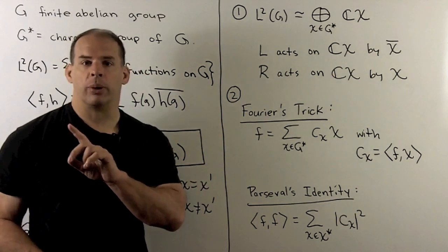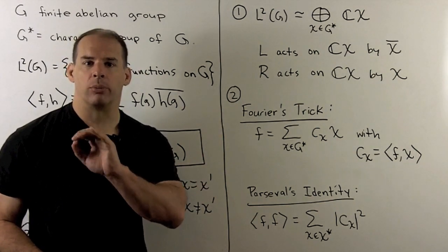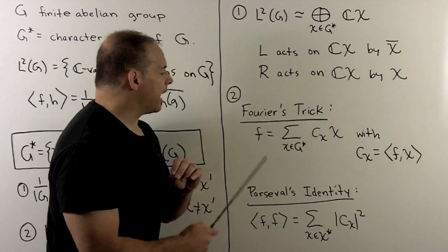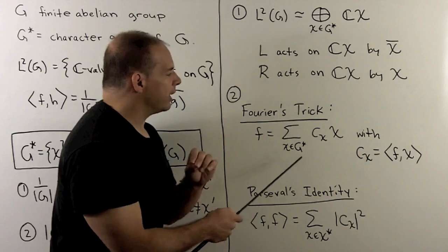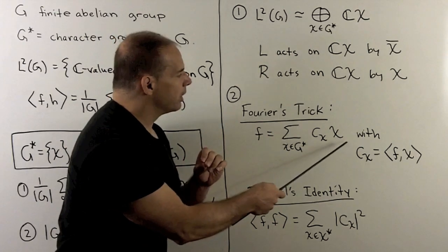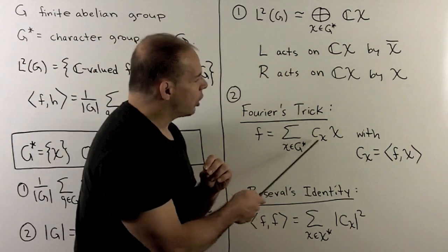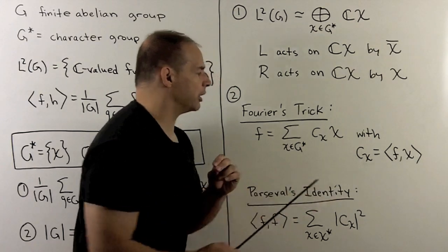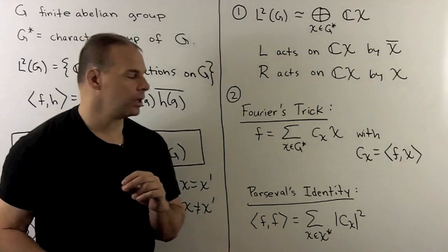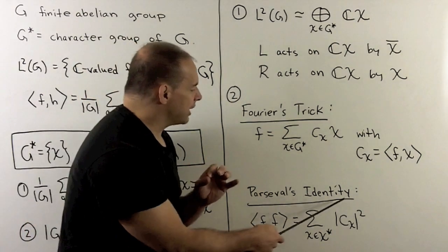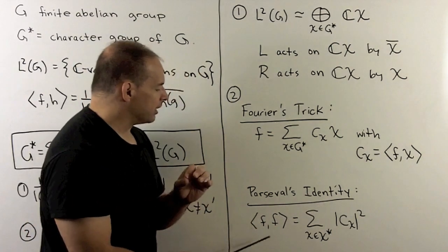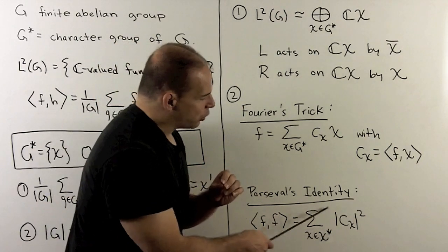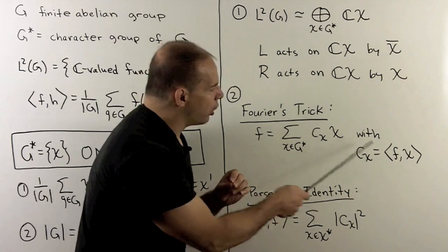Using the orthonormal basis, whenever we have an orthonormal basis, we can invoke Fourier's trick and Parseval's identity. Given any function on the group, to write it in terms of the characters, the coefficients are given by taking the inner product of our function with the given character. Then we have Parseval's identity, which says the length squared of our function equals the sum of the squares of the moduli of our coefficients.